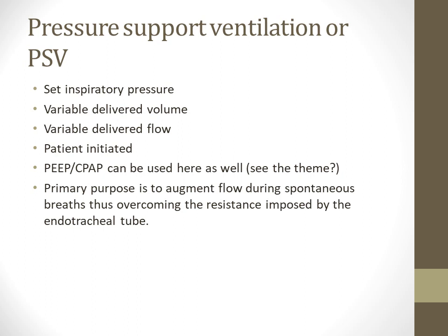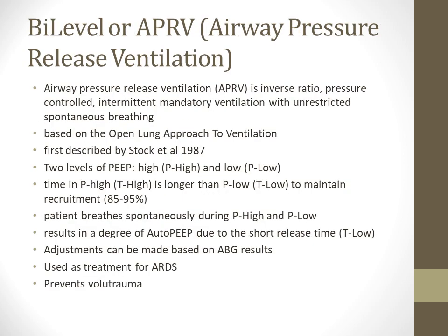Pressure support ventilation — basically BiPAP on a ventilator. You set the inspiratory pressure, volumes and flows are varied, it's all patient-initiated, and you can use PEEP. The primary purpose is to augment flow during spontaneous breaths and overcome resistance from the endotracheal tube — your trachea is roughly the size of a quarter, and an 8mm ET tube takes up a third of the airway. And here's bi-level or APRV — airway pressure release ventilation — which is inverse ratio, pressure controlled, intermittent mandatory ventilation with unrestricted spontaneous breathing.